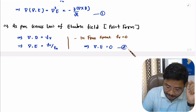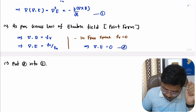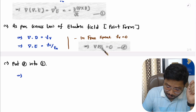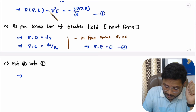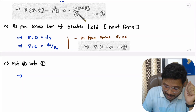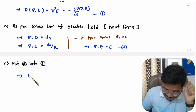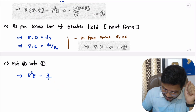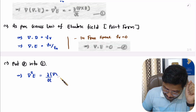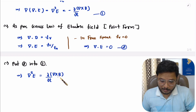So let us substitute equation two into equation one. With del dot E equal to zero, the simplified equation becomes: minus del square E equals minus of del by del T of del cross B. The negative signs cancel, giving us del square E equals del by del T of del cross B.